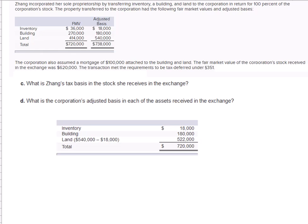So the inventory comes in at $18,000, the building at $180,000, and then we take the land less the $18,000 aggregate net built-in loss on the assets transferred.